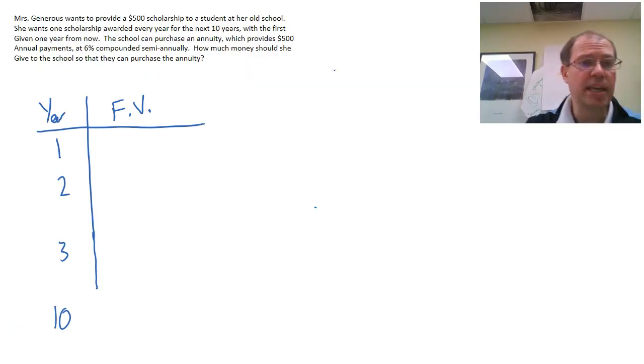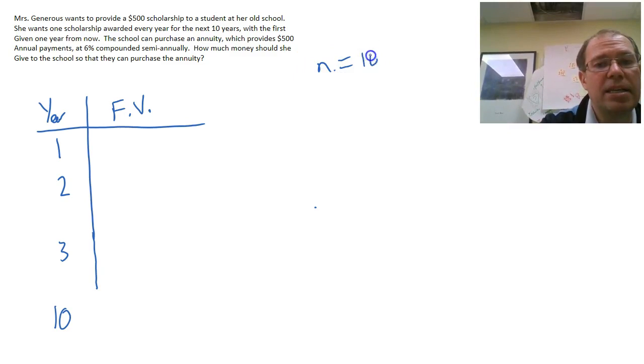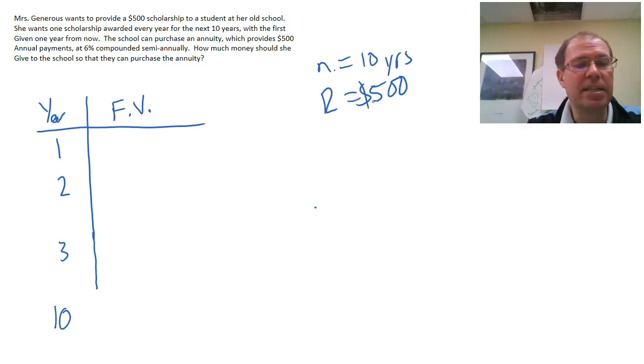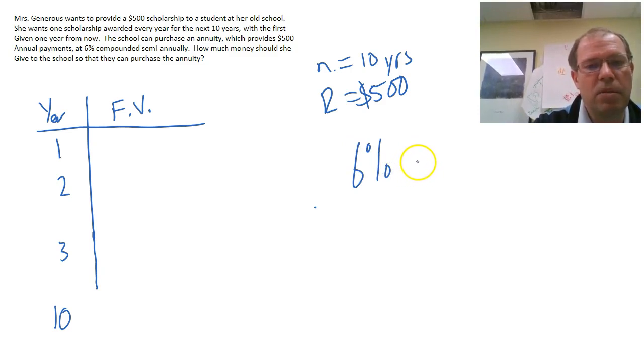Here we have Mrs. Generous again and she wants to provide a $500 scholarship to a student at her old school, but this time she wants to give one scholarship every year for 10 years. So our period is 10 years and she wants to give $500 every year, so once a year a student gets a scholarship of $500. But the tricky thing about this is that the 6% is compounded semi-annually.